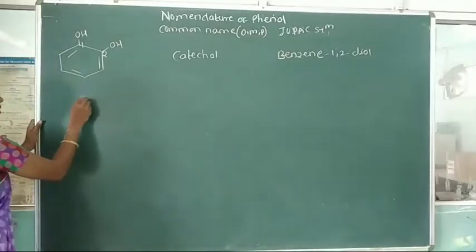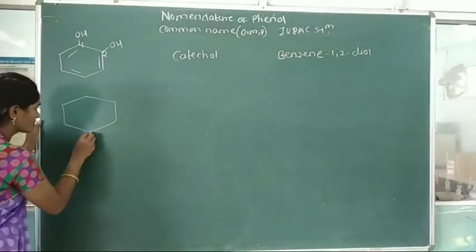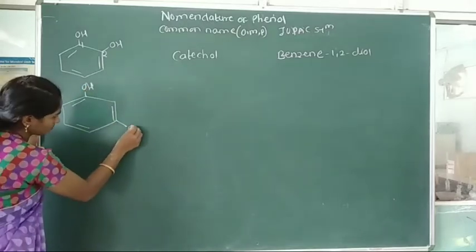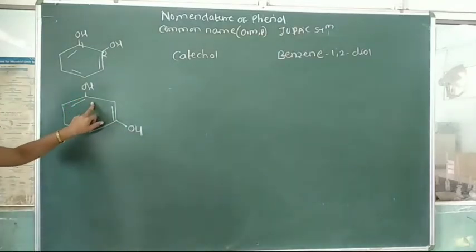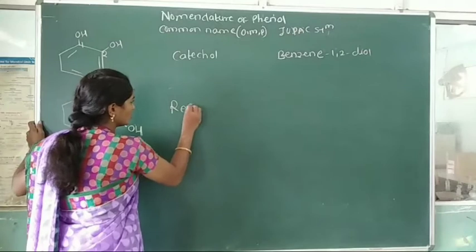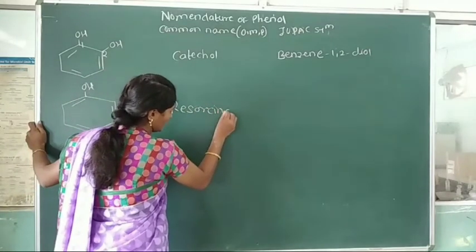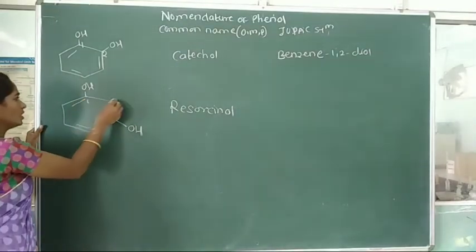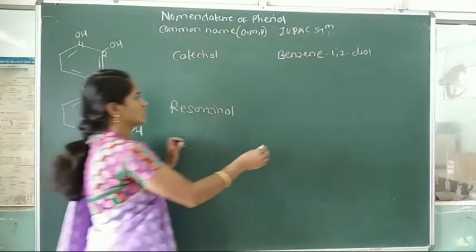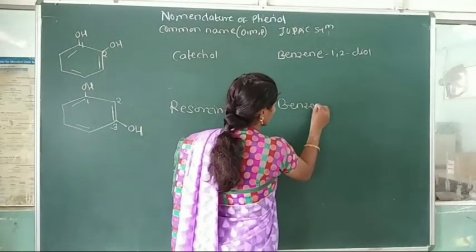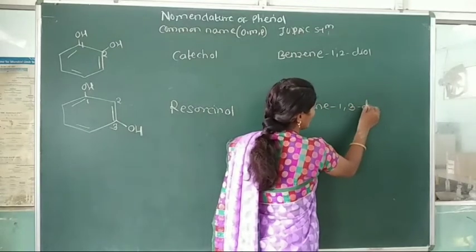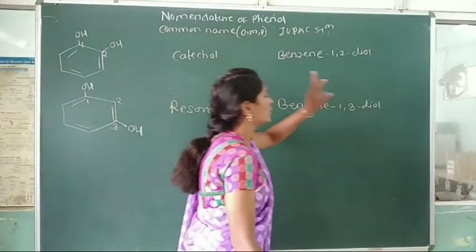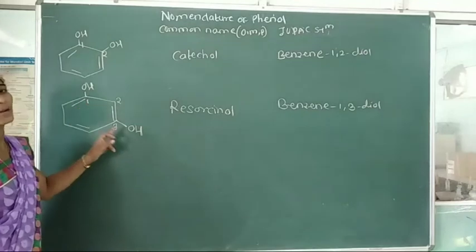Another example: when the two hydroxy groups are meta to each other, the common name is resorcinol. In the IUPAC system, numbering gives 1, 2, 3 — the hydroxy groups are attached to carbon number 1 and carbon number 3, so the IUPAC name is benzene-1,3-diol.